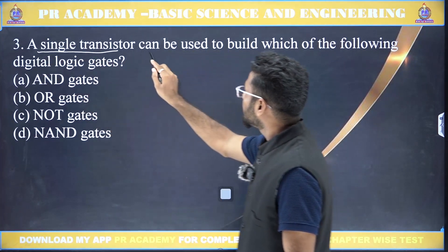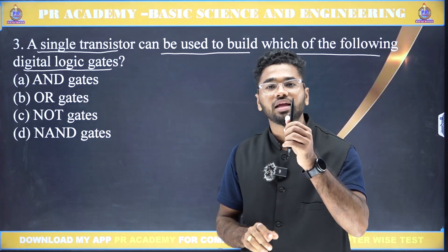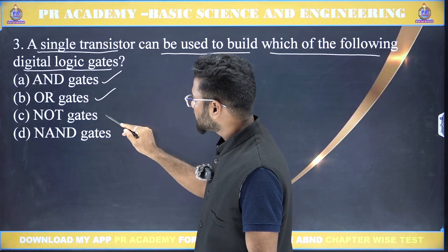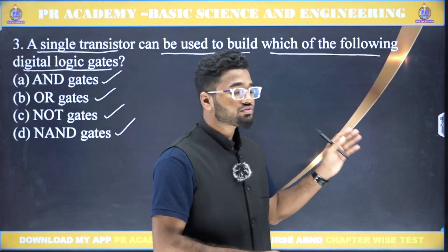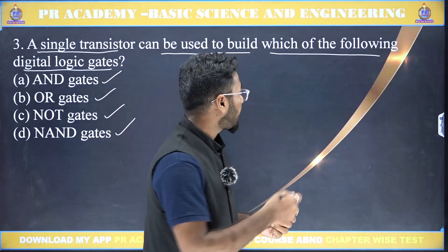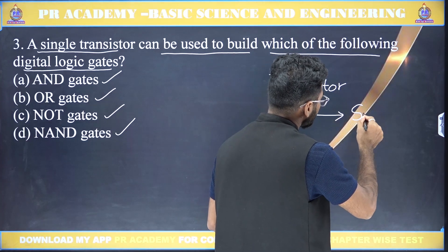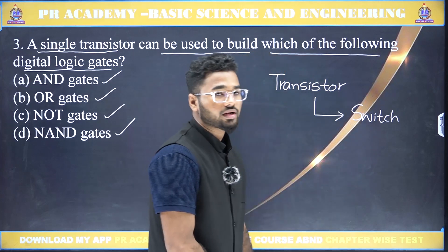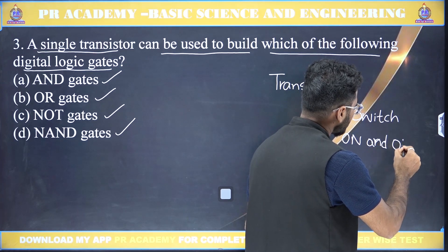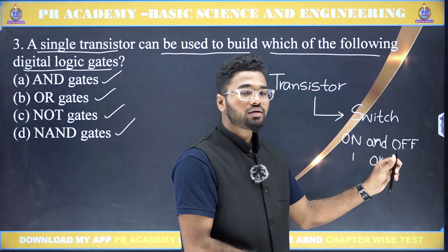Next question: a single transistor can be used to build which of the following digital logic gates? The options are AND gate, OR gate, NOT gate, and NAND gate. A transistor can be used as a switch — it can turn the circuit on or off, meaning it can produce 1 or 0.